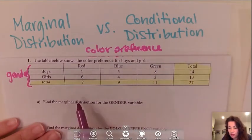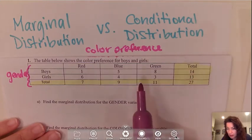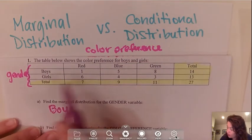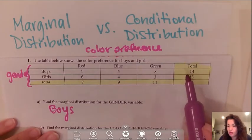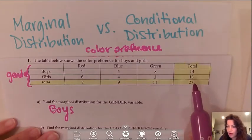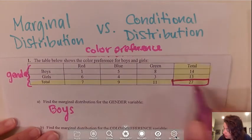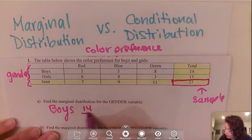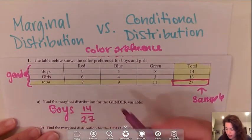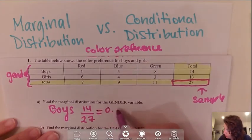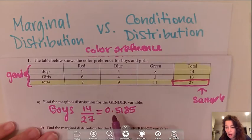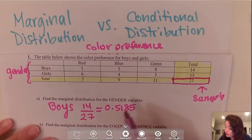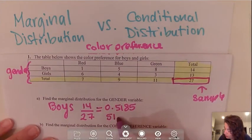Basically anything to do with marginal distribution is what I highlighted in yellow. So if I want to find the marginal distribution for gender, I'm going to write down boys — only using the totals — so it'd be the total boys over our total sample size. That would be 14 out of 27, and if you calculate that it comes out to 0.5185, which is the same as 51.85%. You always want to leave at least three to four decimal places.